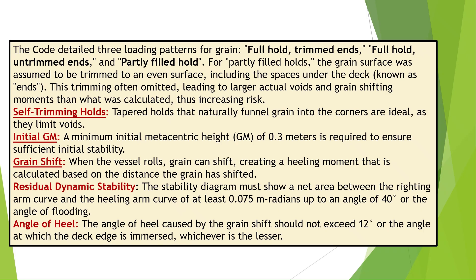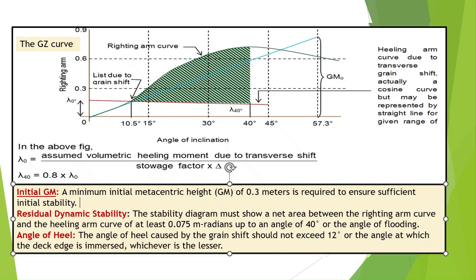Self-trimming holds — tapered holds that naturally funnel grain into the corners — are ideal, as they limit voids. A minimum initial metacentric height, GM, of 0.3 meters is required to ensure sufficient initial stability.